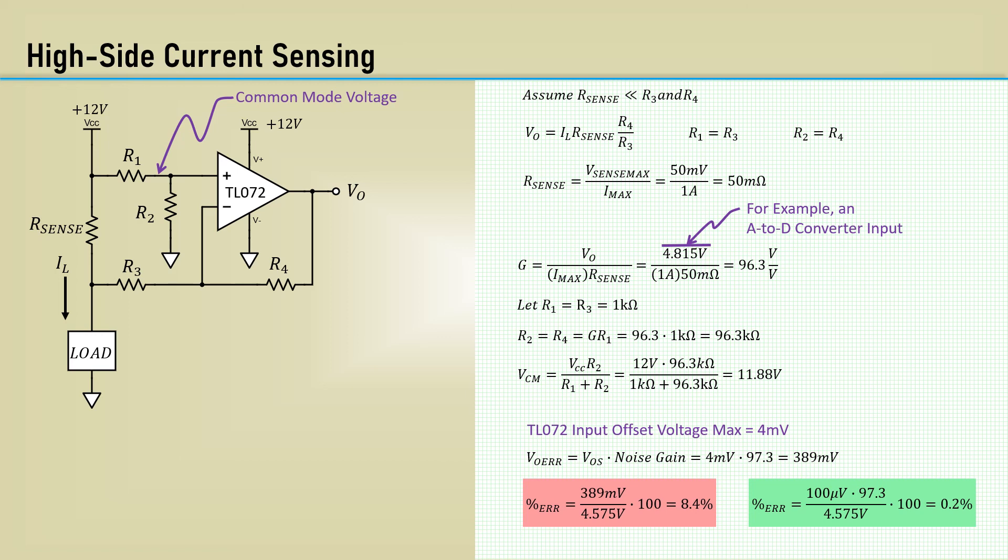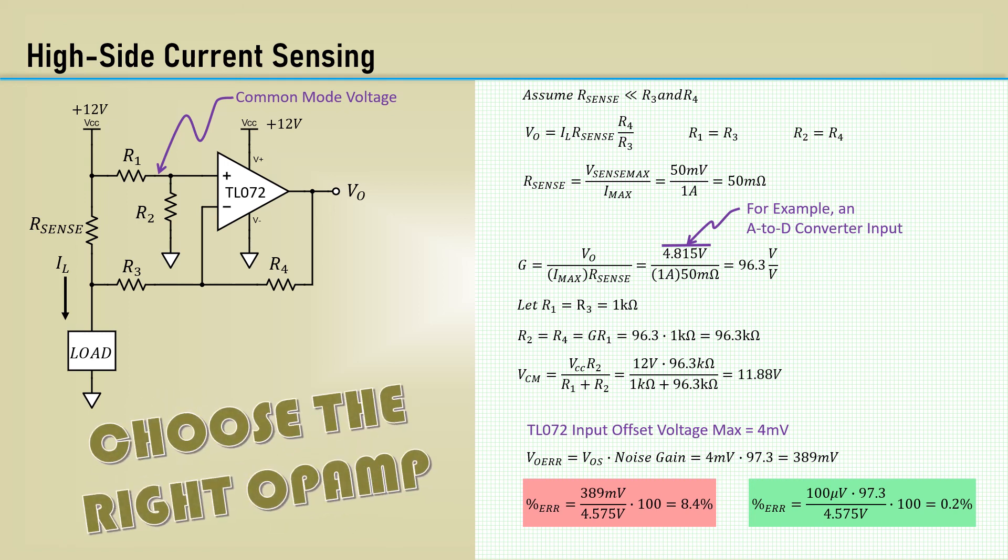By choosing an op-amp with a 100 microvolt max input offset voltage makes for a much better error of only 0.2%. However, keep in mind that resistor tolerances used are often 1%, so don't overachieve on offset error. So the takeaway is to choose the right op-amp.